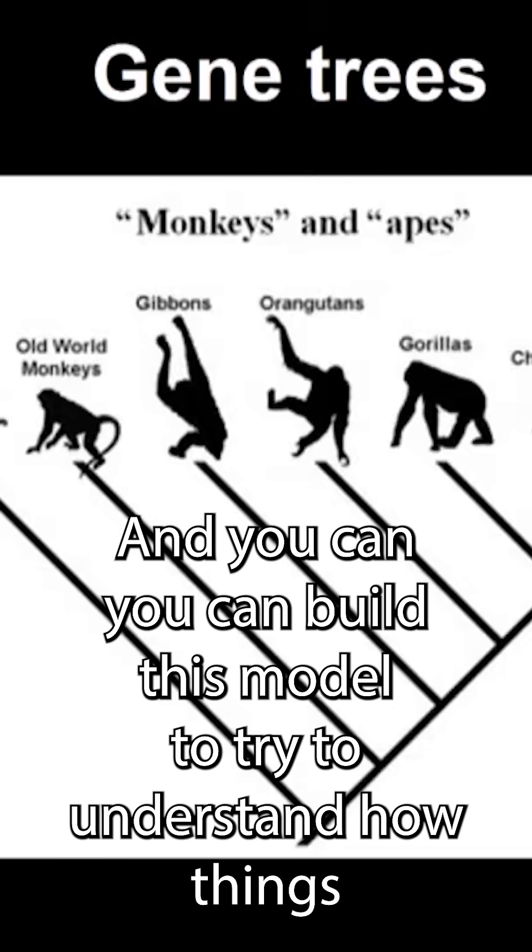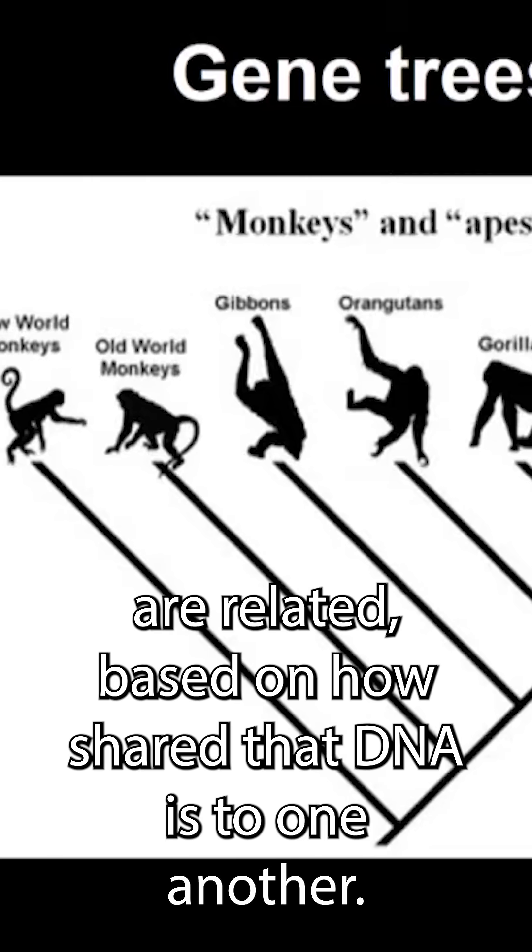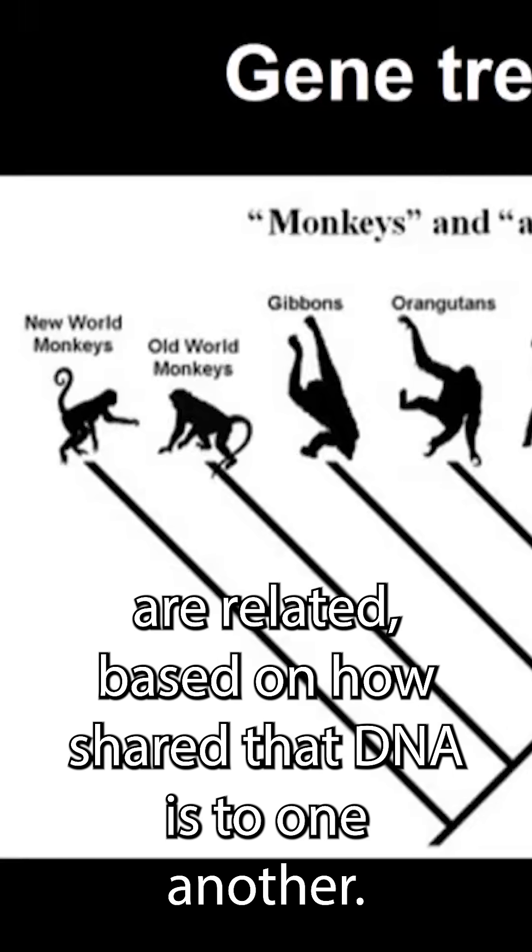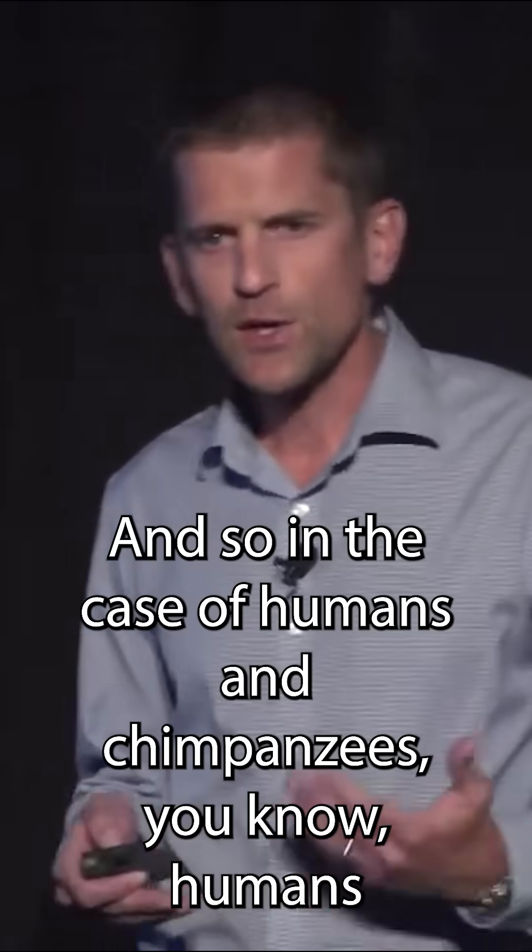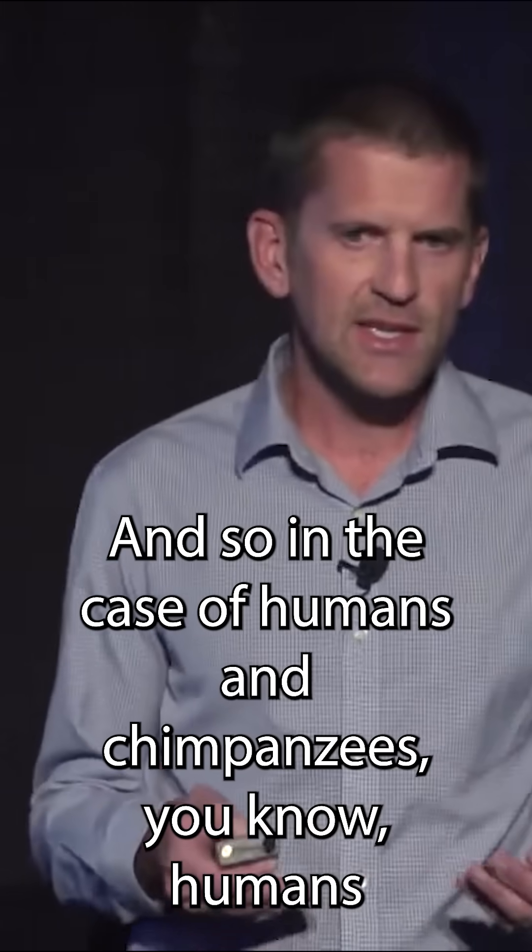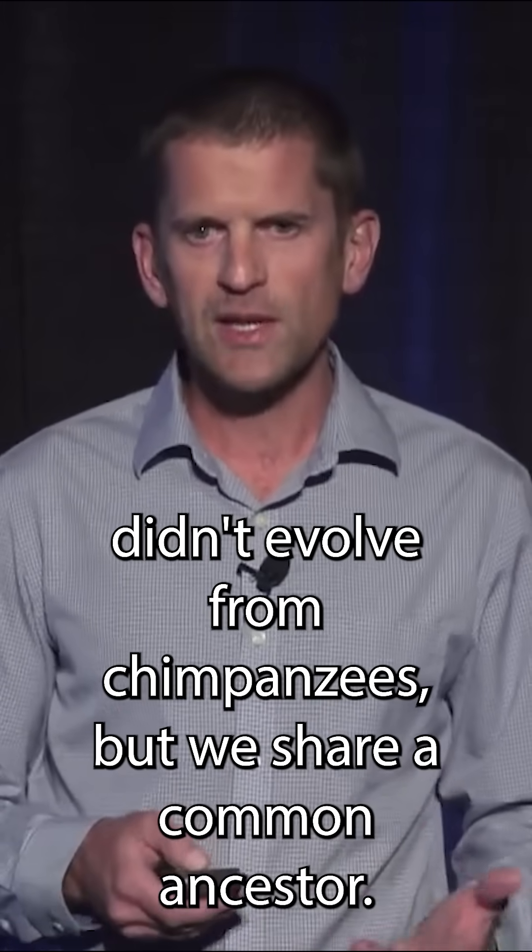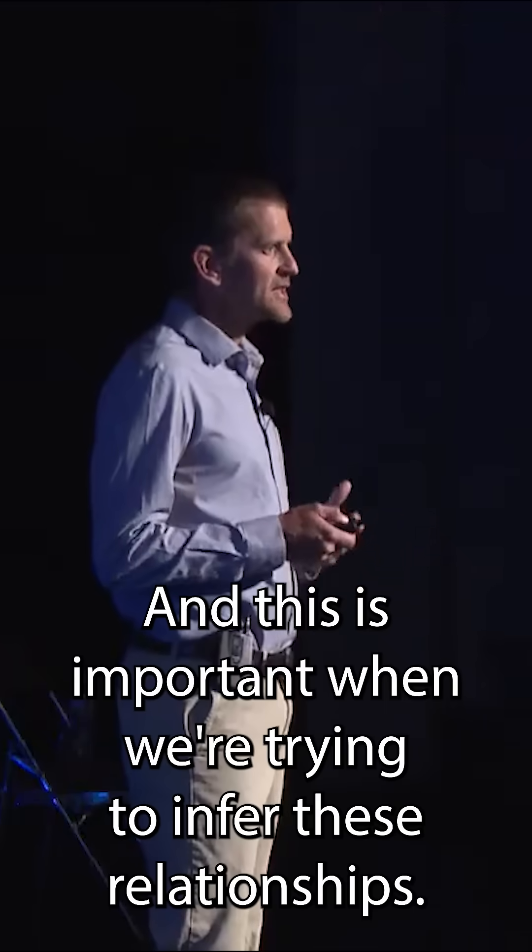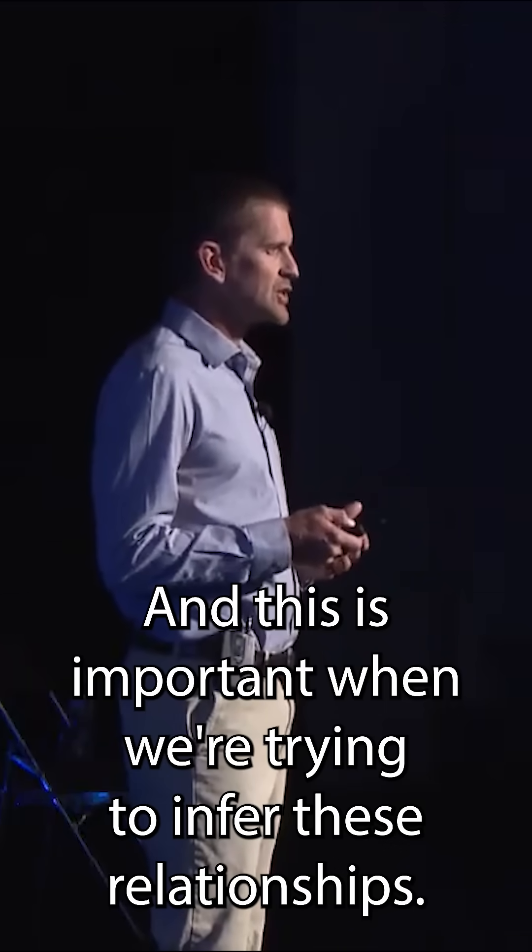You can build this model to try to understand how things are related based on how shared that DNA is to one another. In the case of humans and chimpanzees, humans didn't evolve from chimpanzees, but we share a common ancestor. And this is important when we're trying to infer these relationships.